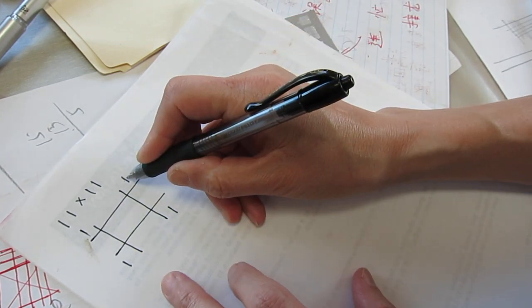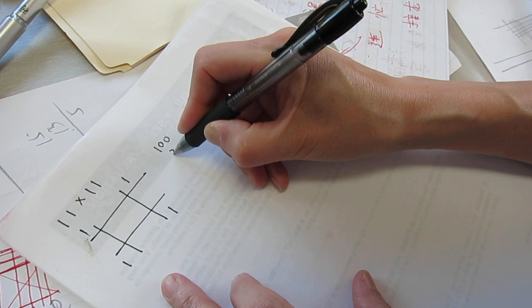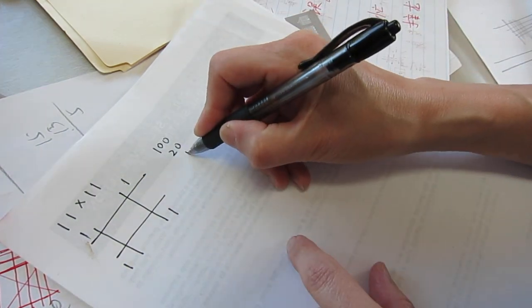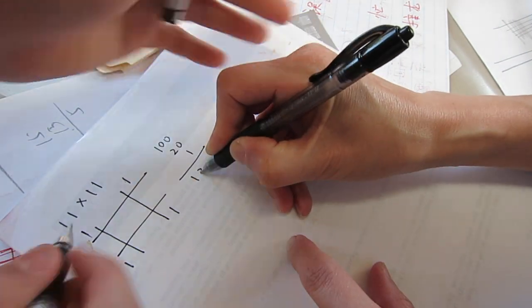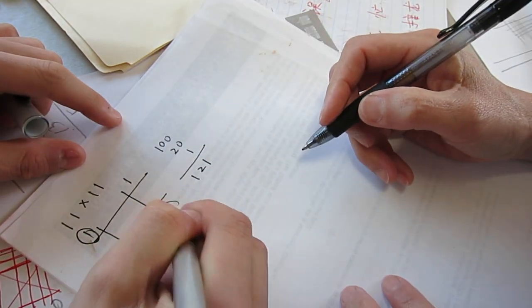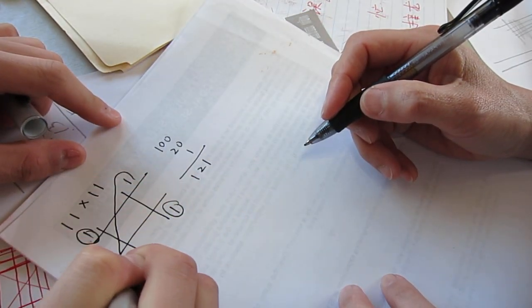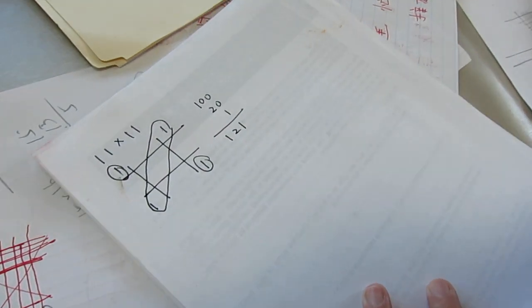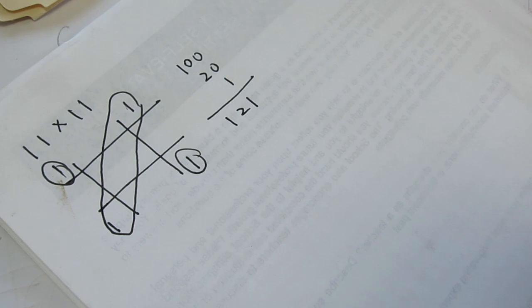So one hundred, and one plus one is two, so this one is in the tens. This one is one. Circle them, so you know which one to add.